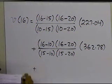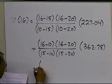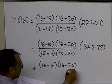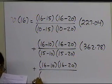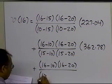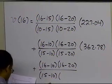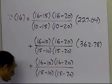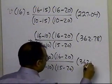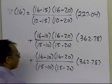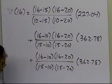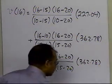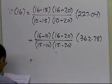And then we have the third part, which is (t minus t0), which is, again, (16 minus 10), times (16 minus 20), which is (t minus t2), divided by (t2 minus t0), which is (15 minus 10), and then (t2 minus t1), which is (15 minus 20), times the velocity at t2, which is 362.78. Sorry, it's (16 minus 15), so this is not right. Let me just rewrite this third part.